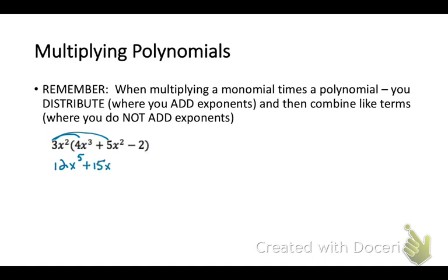When multiplying polynomials, if you have a term in front of the parentheses, you're going to distribute it. When you distribute and multiply, you add the exponents and then combine like terms if needed. I have distributed the 3x squared to the 4x cubed: 3 times 4 is 12, and x squared times x cubed adds the exponents to get x to the 5th. Then 15x to the 4th. Then distributing the 3: 3 times negative 2 is negative 6, leaving just x squared. Take one last look to see if any variable terms can be combined, and if not, you've multiplied and simplified.